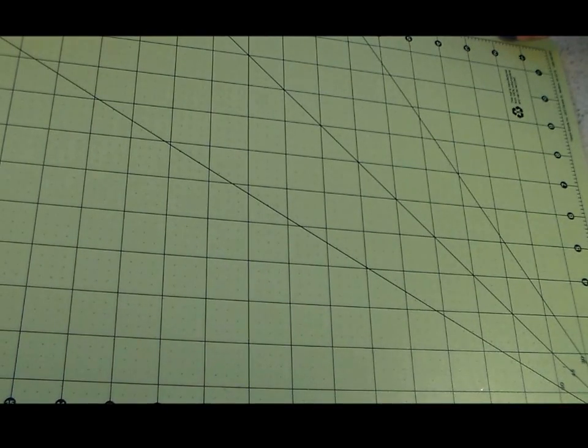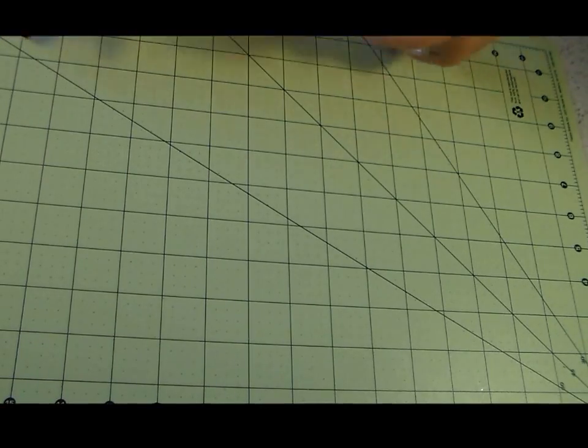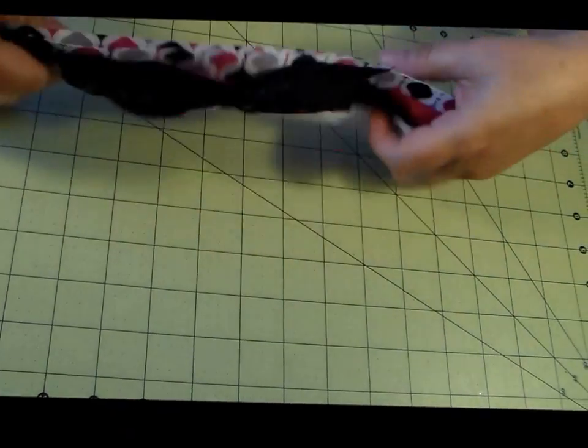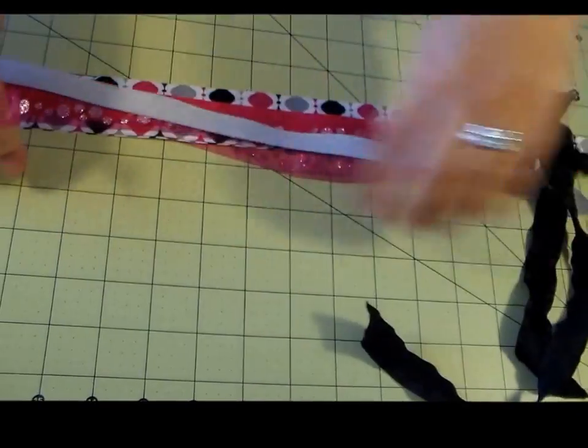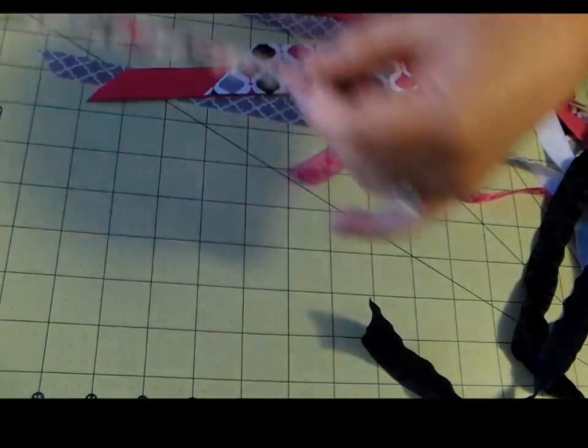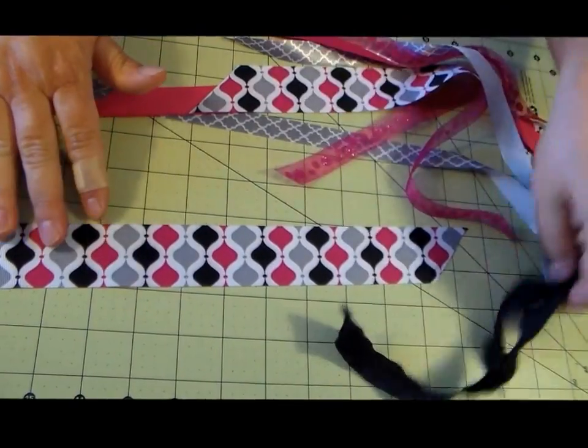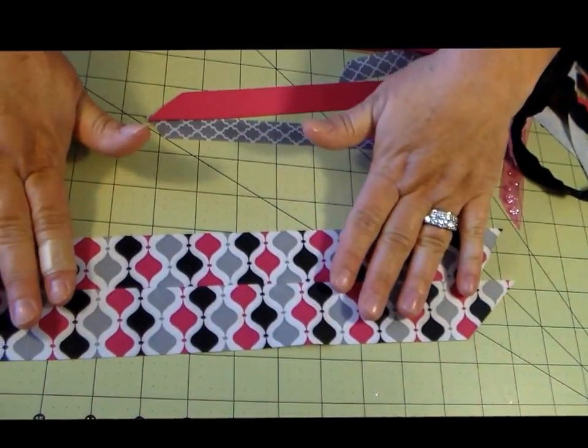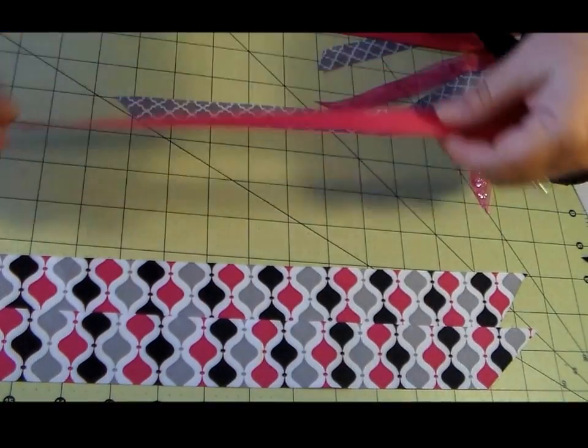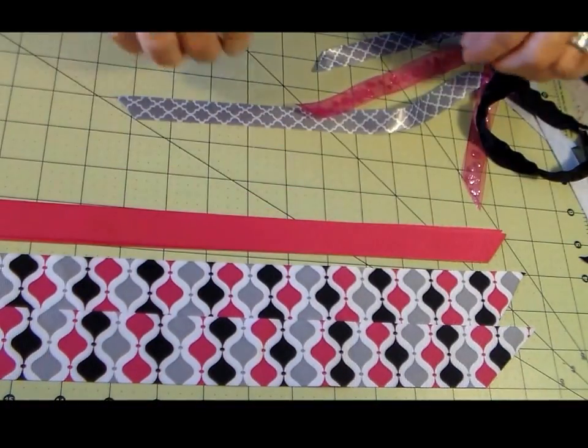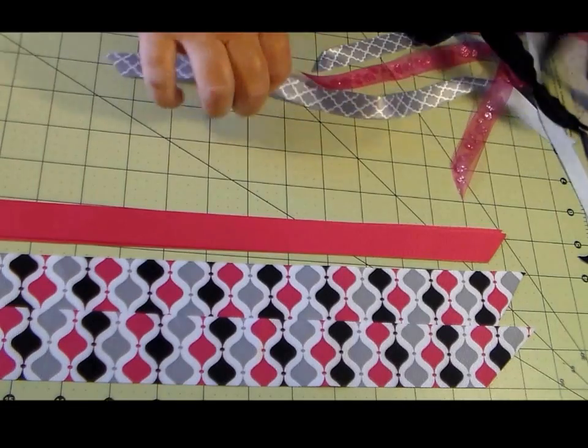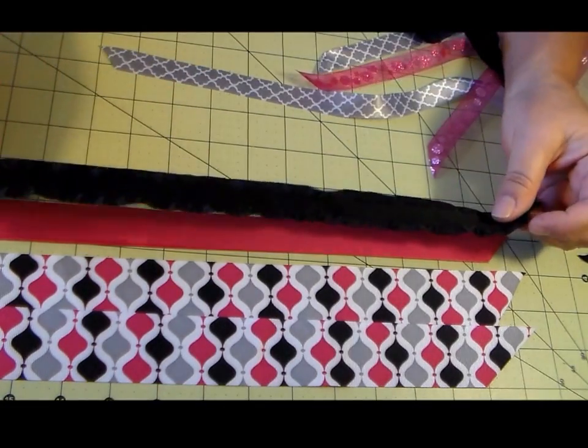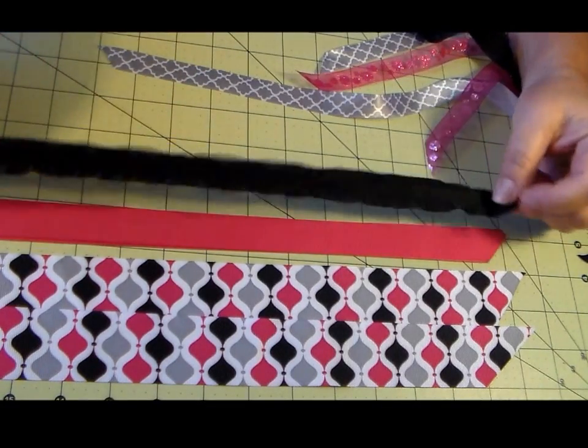You are going to need 8 to 10 different colors and designs of ribbon, whatever goes with the color scheme you're working with. So in this case I am using this is one and a half inch, so you want 2 of each. And then I have 2 of the hot pink.